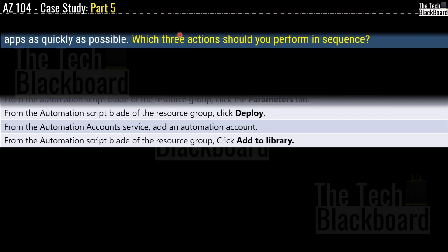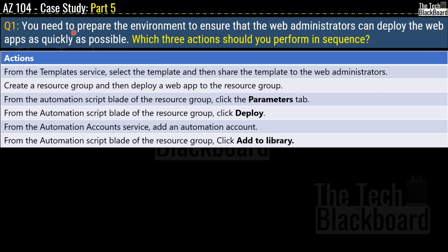Question 1: You need to prepare the environment to ensure that the web administrator can deploy the web apps as quickly as possible. Which three actions should you perform in sequence? The options are: (A) From the Template service, select the template and share it to the web administrators; (B) Create a resource group and deploy a web app to the resource group; (C) From the Automation Script blade of the resource group, click the Parameter tab; (D) From the Automation Script blade of the resource group, click Deploy; (E) From the Automation Accounts service, add an automation account; (F) From the Automation Script blade of the resource group, click Add to Library.